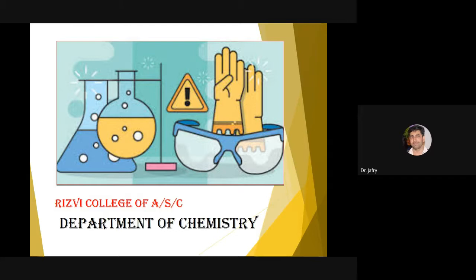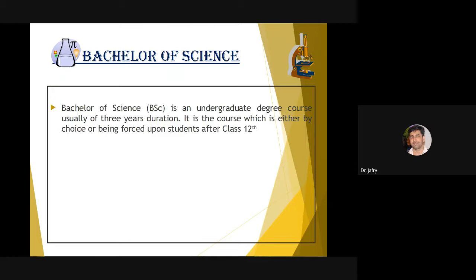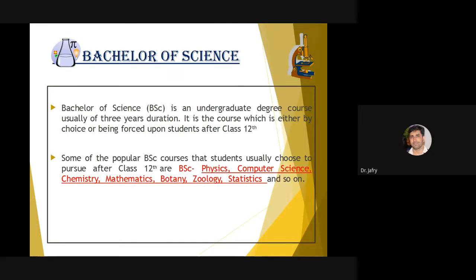My colleagues have spoken about mathematics and physics; I am going to speak on chemistry, and later you will hear from botany and zoology as well. All the fields are equally important — you cannot rank any particular subject. It depends on your interest; whatever you're good at, you should proceed with that subject. I'll give a glance of what you can do in chemistry and how much you can achieve by doing BSc with chemistry. BSc is a bachelor's course of three years done after 12th standard. At Rizvi College we have physics, chemistry, mathematics, botany-zoology — and we have three different combinations: physics-chemistry-maths, and physics-chemistry-botany.